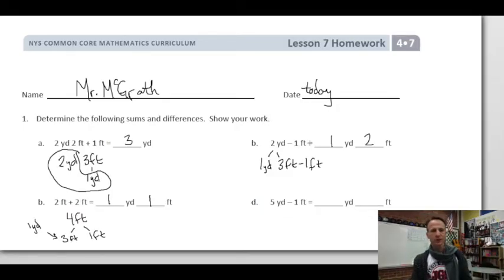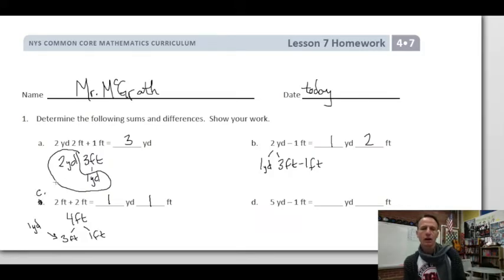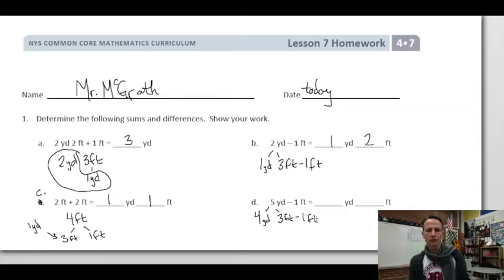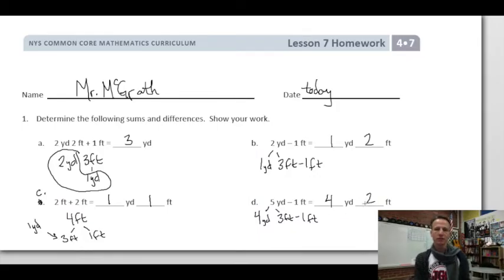Five yards minus one foot — very similar to the one above. By the way, this should be labeled letter C — a rare Eureka error. Five yards: four of them we leave as they are, and that fifth yard we decompose as three feet. Now we subtract one foot, leaving four yards and two feet. Just like the one above!